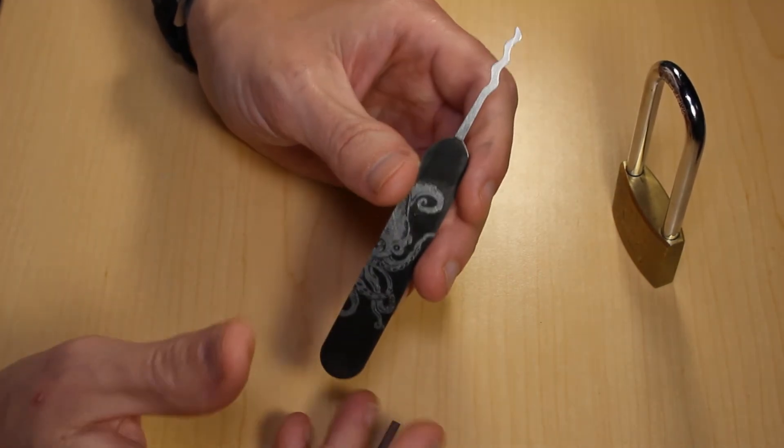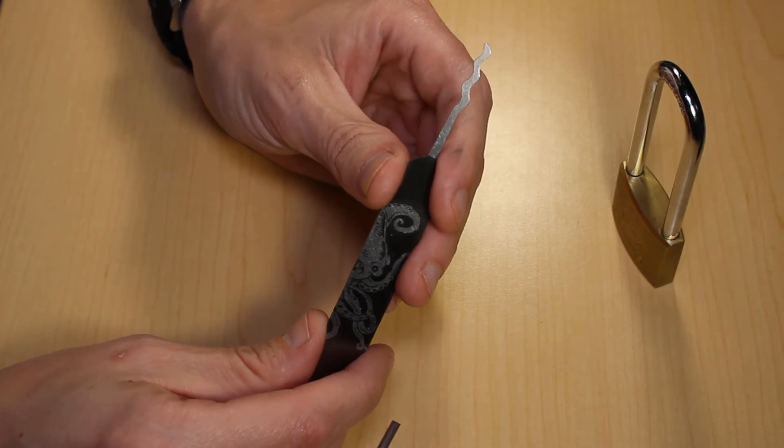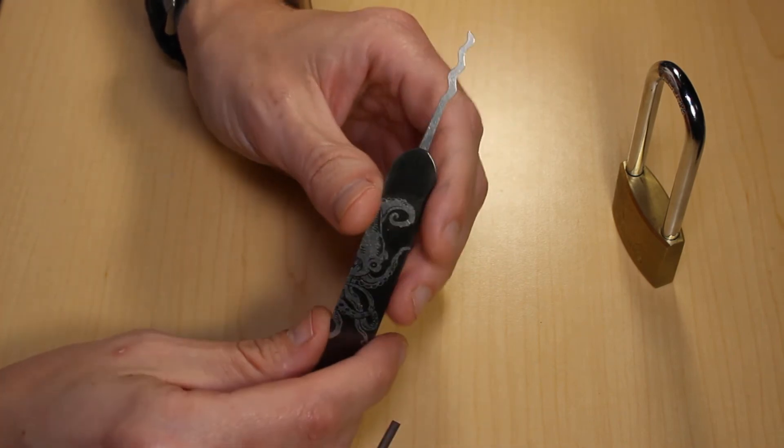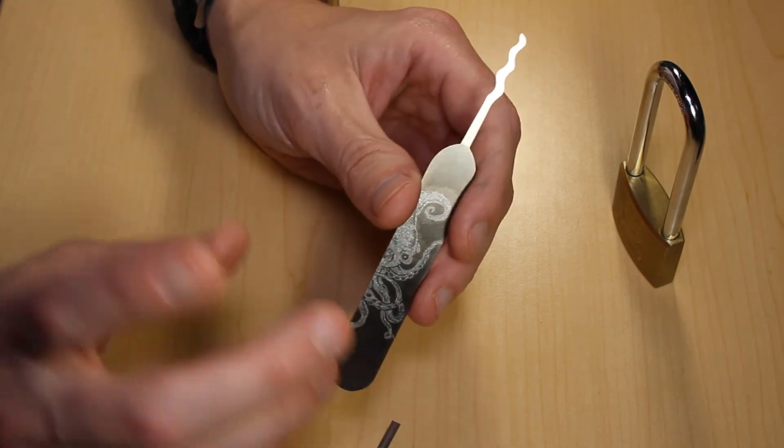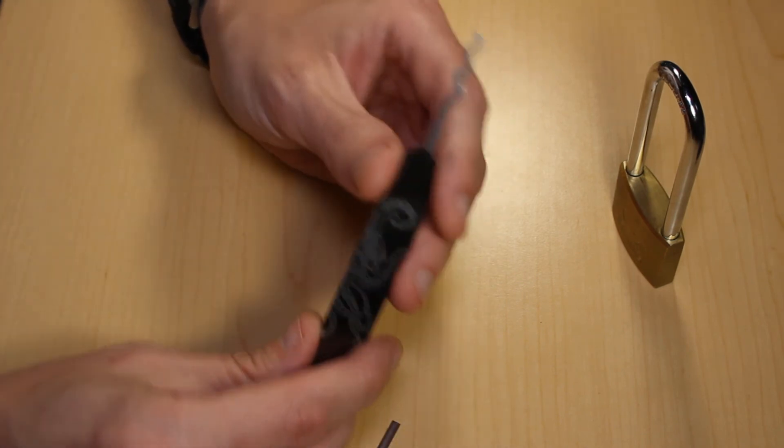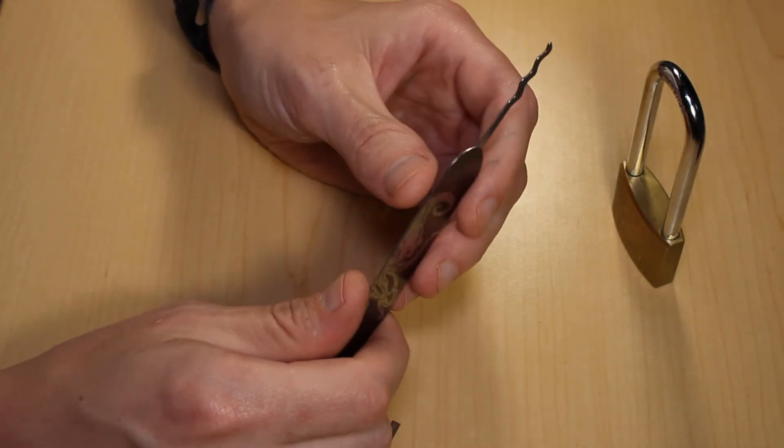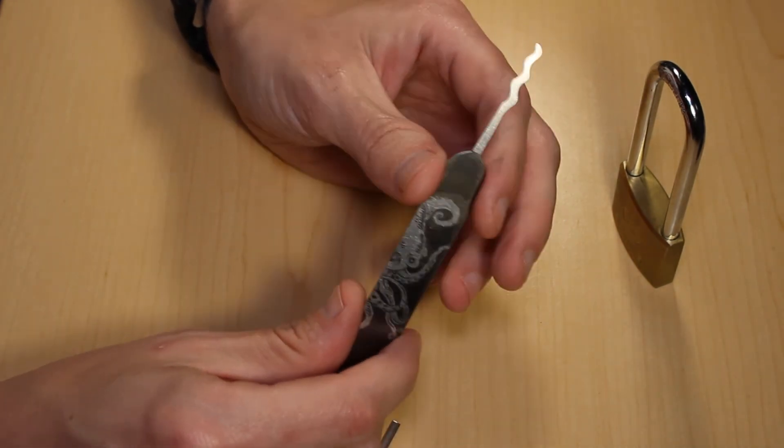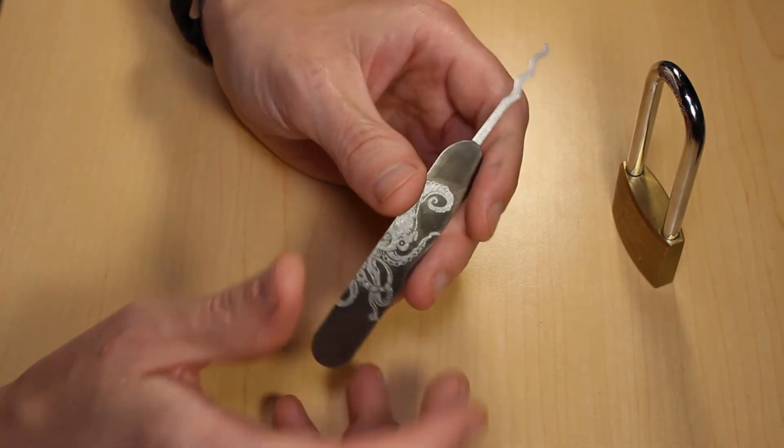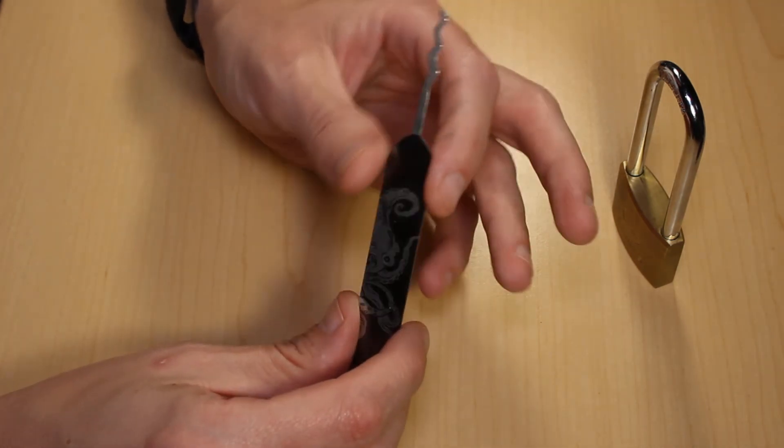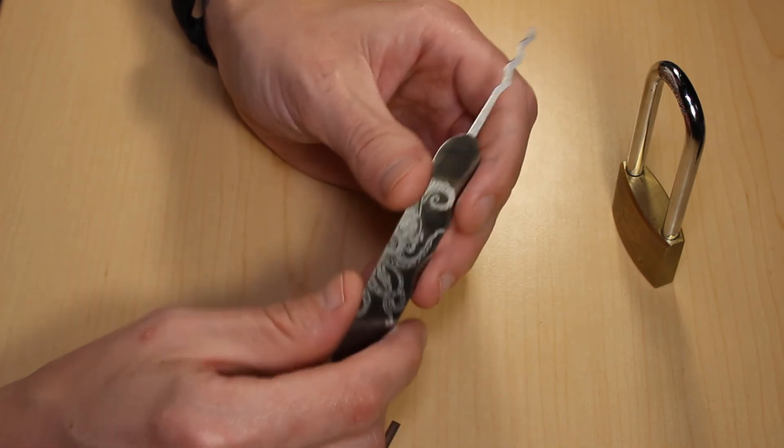So that's about all I got for you on this, the Sparrows Octo Rake. If you like my videos, please like and subscribe. If there's a specific lock that you think this is good on, please drop a comment. And I want to hear what you guys are opening with this and the wide variety of locks maybe that everyone's popping open with the octo rake. And let me know your successes.